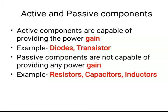Passive components are not capable of providing any power gain. They don't generate or increase the power or voltage. Examples of passive components are resistors, capacitors, and inductors. So just remember: active components provide gain, and passive components do not provide any gain. In this chapter, we are going to understand passive components — that is, resistors, capacitors, and inductors.